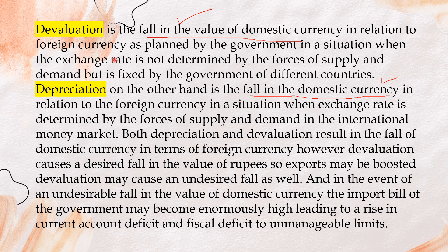Devaluation is fixed by the government of different countries — the government willingly plans to devalue the domestic currency. When we talk about depreciation, it is also a fall in the domestic currency in relation to foreign currency, but here the exchange rate is determined by the forces of demand and supply in the international market — this is not planned by the government. Both result in a fall of domestic currency, but devaluation causes a desired fall, desired by the government to boost exports.